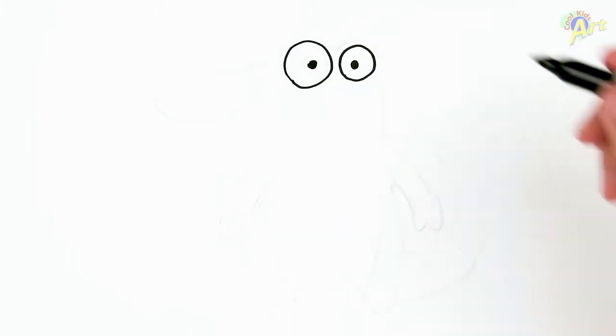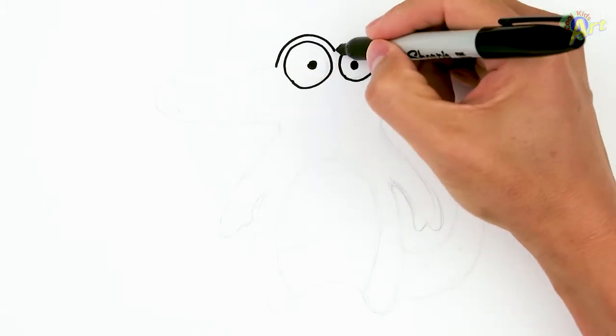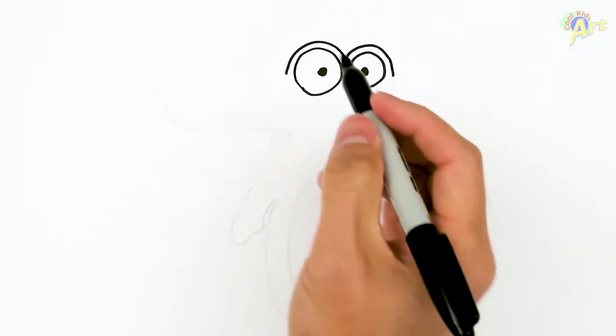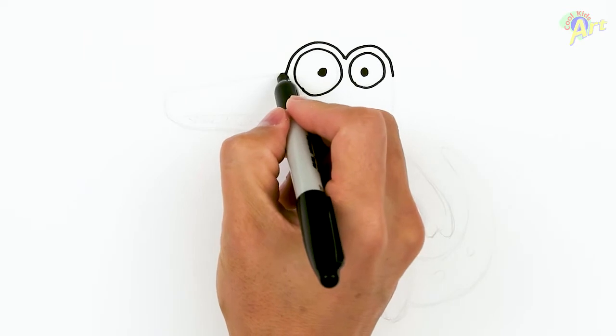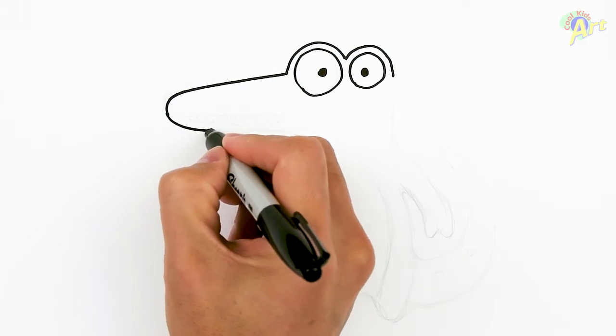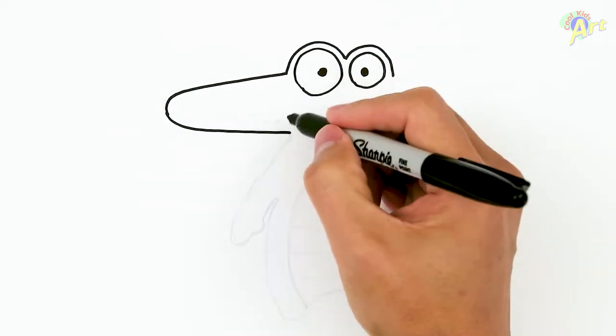Alright, so then once we have this, we're going to draw an outline straight over it. So this will be part of his head. And then now for his snout, his jawline, just come all the way out and then come back right around here.